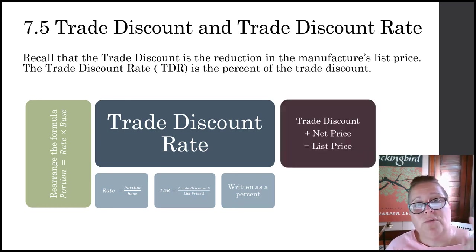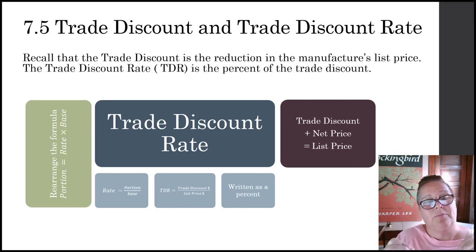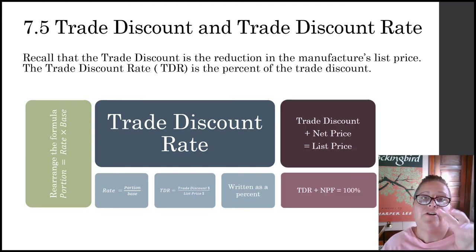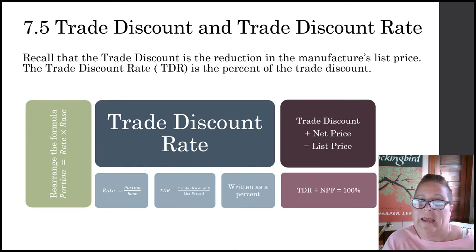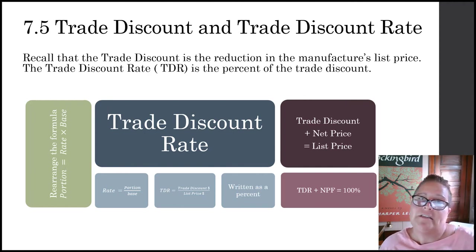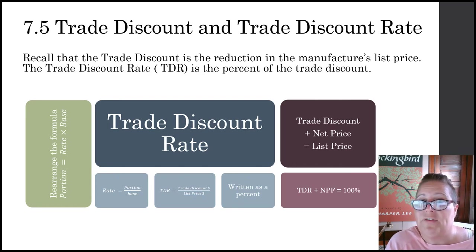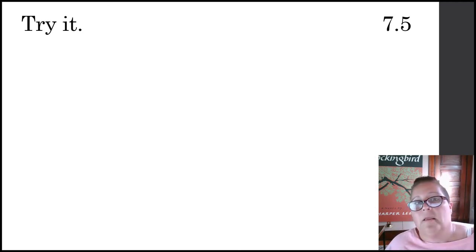Keep in mind that if you know the trade discount and you know the net price, the trade discount plus the net price have to add up to be the list price. Because the trade discount rate and the net price factor, when added together, must equal 100% of the cost. Whatever amount was taken off is the trade discount, and whatever is left to pay is the net price. Add them together and you get the original list price. Similarly, the trade discount rate plus the net price factor must equal 100%.